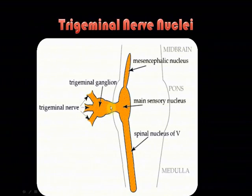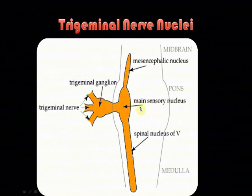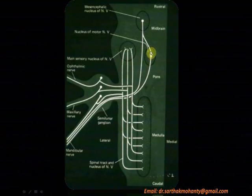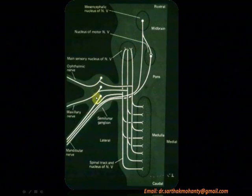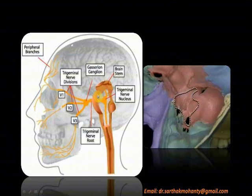The sensory root arises from three nuclei: the mesencephalic nucleus, main sensory nucleus, and the spinal nucleus of the trigeminal nerve. Fibers from these three nuclei form the trigeminal ganglion — this portion is entirely sensory. The motor nucleus, shown here, just passes through the ganglion without relaying in it. This is the trigeminal nerve root in the pons.